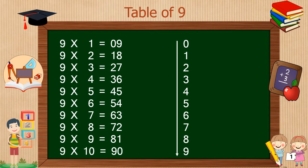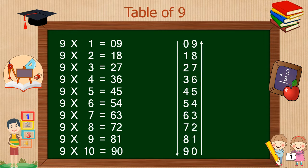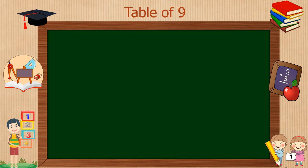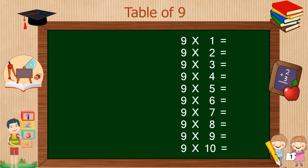Similarly, in the right column, digits appear from 0 to 9 sequentially in reverse order. So our 9 table is ready. This is a simple and easy way to remember the table of 9. By using this trick, you can write down the table of 9 in just a minute. Let's look at another simple trick for the table of 9.